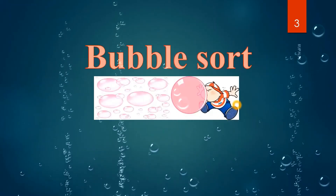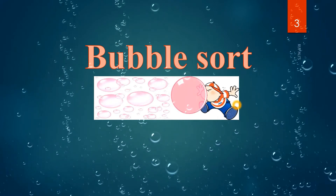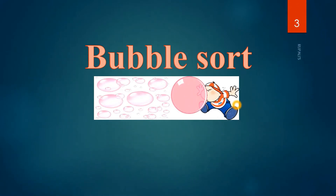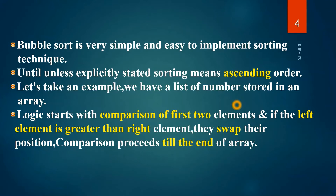Today we will learn one of the popular and important sorting algorithms: bubble sort. Bubble sort is a very simple and easy to implement sorting technique. Unless explicitly stated, sorting means ascending order sorting. We have a list of numbers stored in an array. The logic starts with comparison of the first two elements, and if the left element is greater than the right element, then swap their positions. Comparison proceeds till the end of the array.